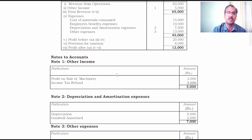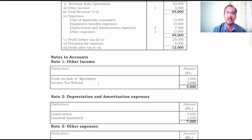Let's also look at the notes prepared. Note number one — other income: profit on sale of machinery 2,000; income tax refund 3,000. These two are non-operating incomes. So they have to be deducted from profit before tax and extraordinary items to calculate funds from operations first, followed by cash flow from operations next.